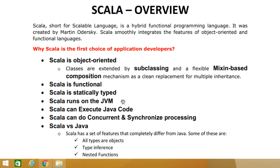Scala can also execute Java code — it enables use of all Java SDK classes as well as custom Java classes and Java open source projects. Additionally, Scala supports concurrent and synchronized processing, allowing immutable coding that makes it easy to apply concurrency and parallelism.